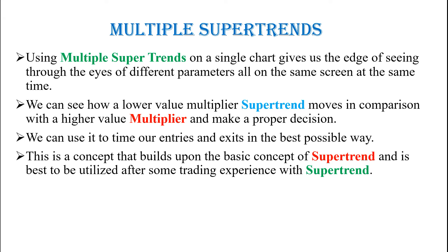If we are using multiple supertrends on the same screen, we are not changing the time frame — whatever time frame we are trading, we keep the same. We can see how a lower value multiplier supertrend moves in comparison with the higher value multiplier, and make proper decisions. We can use it to time our entries and exits in the best possible way. These are the advantages of using multiple supertrends instead of a single supertrend.